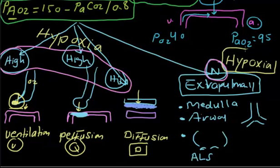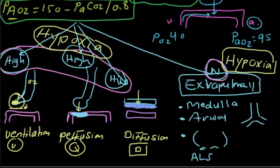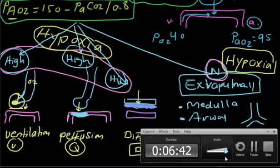In both categories, the patient presents with hypoxia — these are the causes of hypoxia where the A-a gradient can be either high or normal.